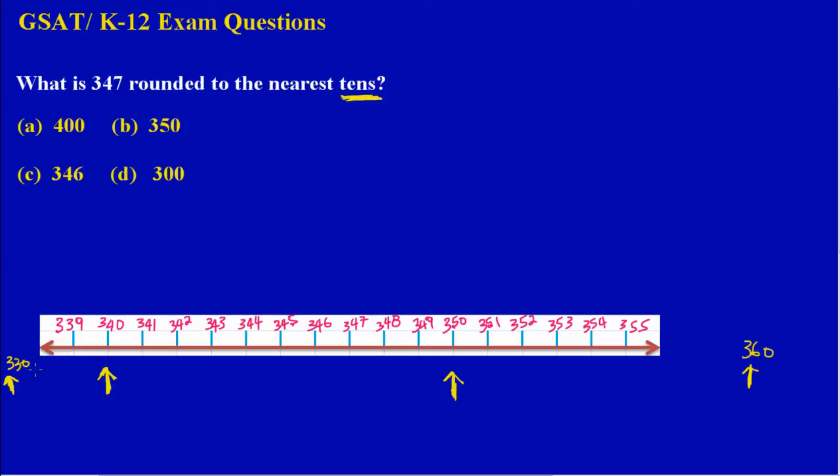Out of all these tens that I have marked on my number line, which one is 347 closest to? Let me use green to highlight where my 347 is.